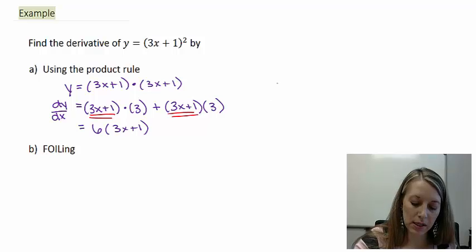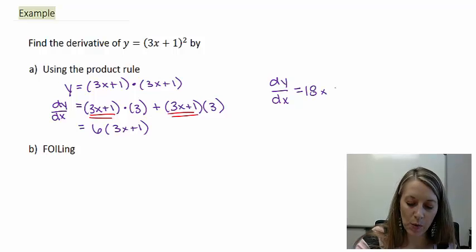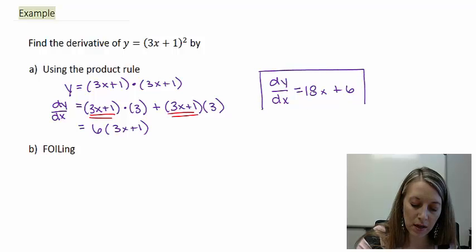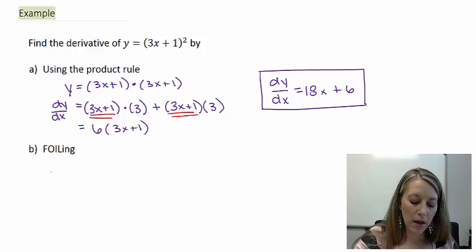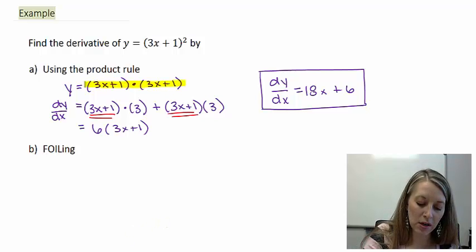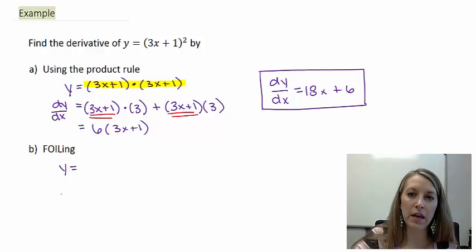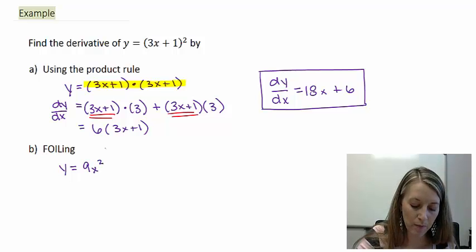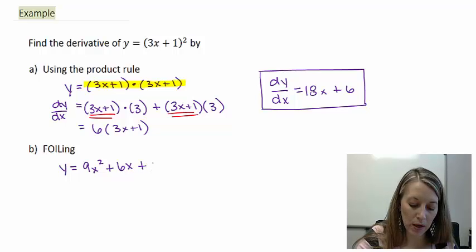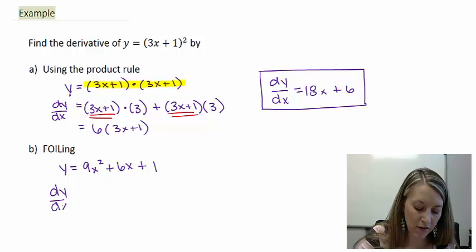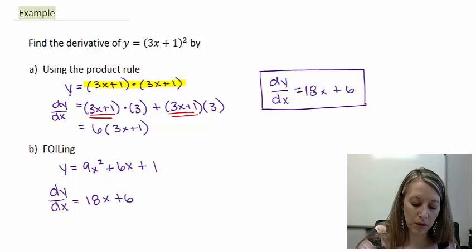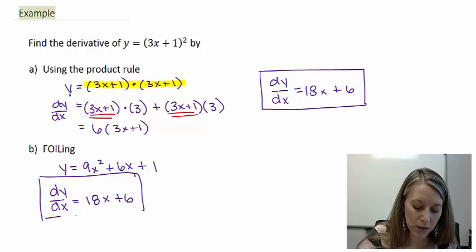If you choose, you can distribute the 6 through to simplify completely — 6 times 3x gives 18x, and 6 times 1 gives 6. So the derivative of (3x + 1)² is 18x + 6. In Part B, we take the derivative by multiplying it out completely using FOIL: 3x times 3x gives 9x², the outside and inside terms give 6x, and last, 1 times 1 gives 1. Taking the derivative using the four shortcut rules gives us 18x + 6 — the same answer as Part A.